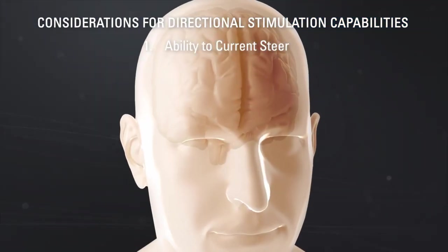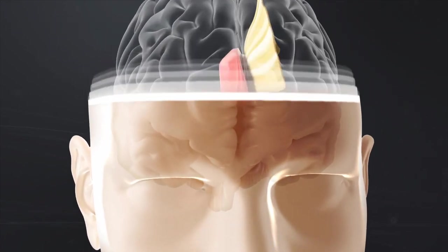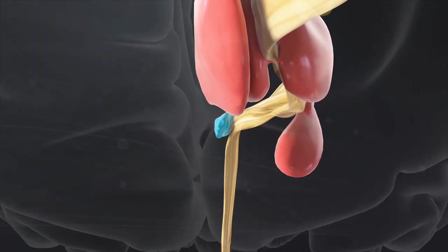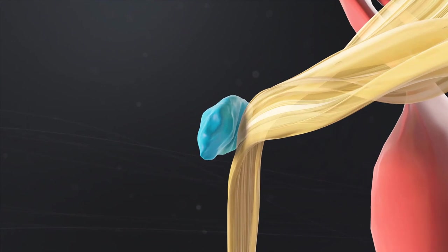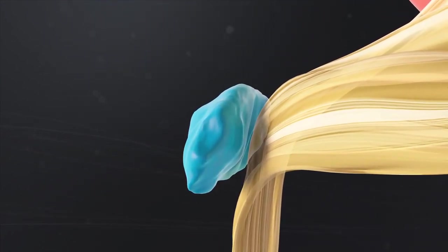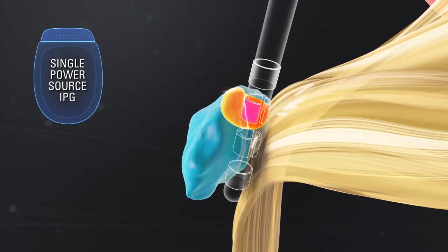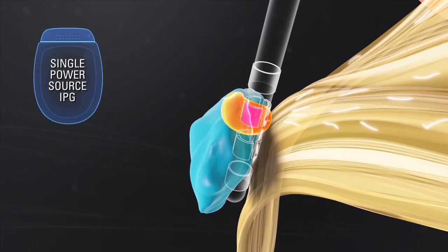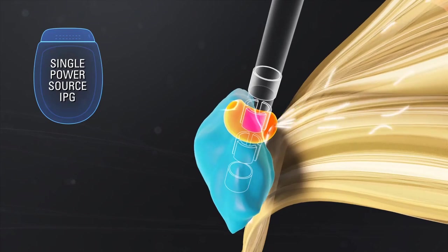Leads that are powered by conventional single-source IPGs may not precisely control directionality to avoid stimulating side-effect structures while adequately stimulating the therapeutic target. With a single-source IPG, electrodes can only be turned on or off without the ability to finely steer current.